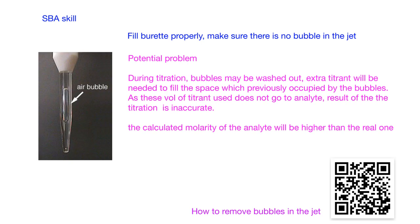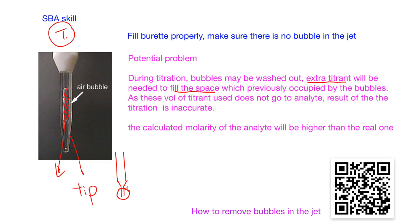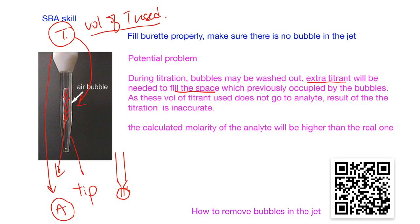One SBA skill reminder: in the burette, when we draw the tube of the burette, sometimes we may not fill it properly, so there may be air bubbles in the jet. If there is a bubble in the jet, that will be a problem because during the titration the bubble may be pushed out. If the bubble is pushed out, this empty space requires extra titrant to fill it. That extra titrant is supposed to go to the analyte, but instead it is filling this area, meaning the volume of titrant used is not equal to the titrant actually added to the analyte.